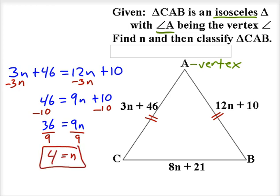So we found n. That's done. Now we need to classify the triangle. In order to classify the triangle we need to figure out how long its sides are. So we'll take that value of n and we'll substitute it in to each of the three side lengths: 3n plus 46, 12n plus 10, and 8n plus 21.